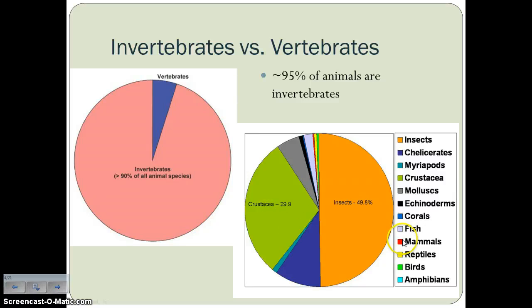You can see mammals here — the animals we are most familiar with because that's what we are — and that's that tiny little red sliver on the pie chart.